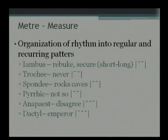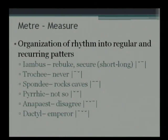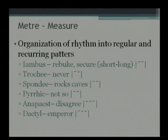What words do we have as examples of Trochee? Never, giant, picture, heating. So we have long followed by short. Then we move to Spondee. In the Spondee, notice my dear students, it is again two syllables, but both of them are long — that is, both of them are stressed. Like 'rocks,' 'caves.' The Pyrrhic is the total opposite, where both of them are unstressed or both are short. And therefore you have 'not so.'